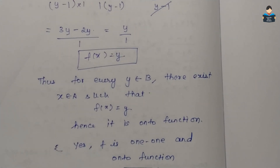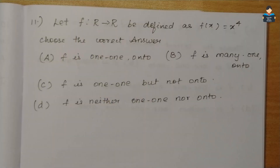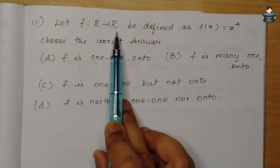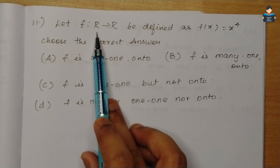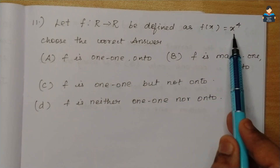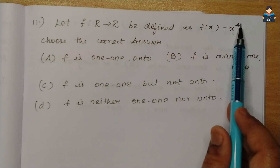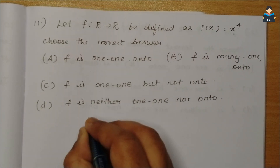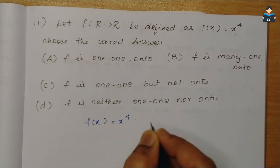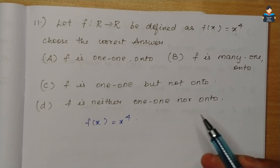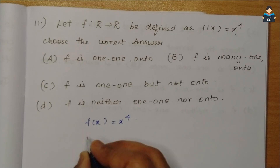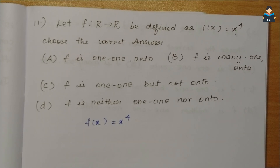Next, let's look at Question 11. The function is f: R → R, with domain and codomain both real numbers, defined by f(x) = x⁴. We need to choose the correct answer from the options given. First, let's check if it is one-to-one.